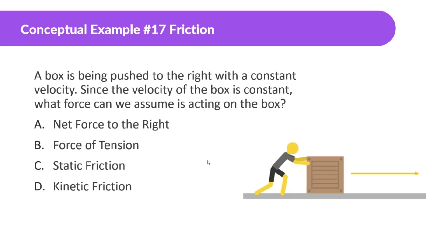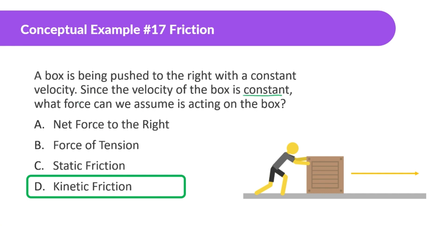A box is being pushed to the right with a constant velocity. Since velocity is constant, what force can we assume is acting on the box? It's moving, so it's kinetic friction. We know someone's pushing on it, so there's a force applied. If there were no friction, it should be accelerating to the right. But since there's no acceleration — acceleration equals zero — there needs to be something canceling out the applied force. In this case, that's the force of kinetic friction.